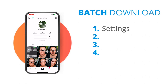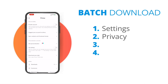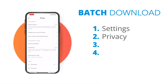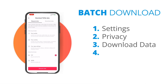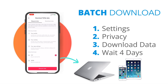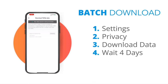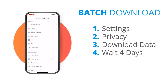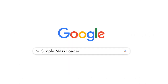First, go to your settings, then privacy, then you'll see an option to download the data. Click that and it sends a request for the data to be packaged up so you can download it to your computer or your device. It can take up to four days to get that. Once you have it, all of the links to all of your videos on TikTok will be inside of that file — it's kind of like doing it all at once.